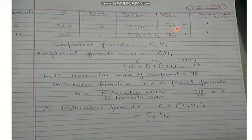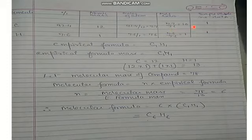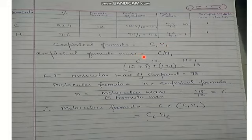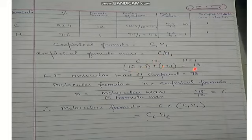Dividing: 7.7 / 7.6 ≈ 1.0 for carbon, and 7.6 / 7.6 = 1 for hydrogen. So the simple whole number ratio is 1:1, meaning the empirical formula is CH. The empirical formula mass is: 12 × 1 + 1 × 1 = 13 grams.